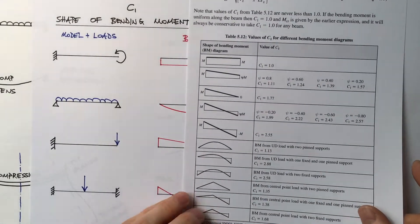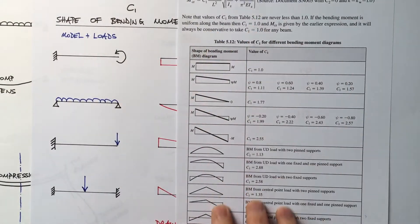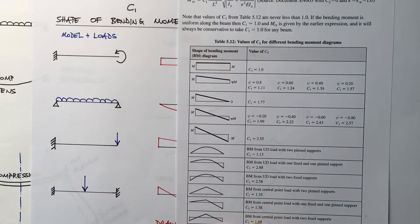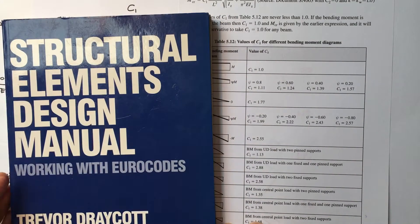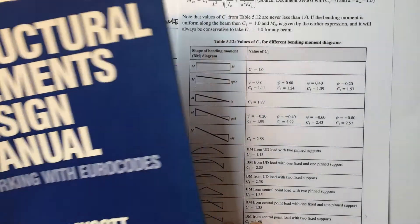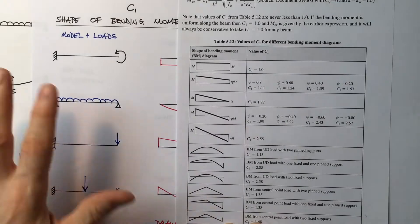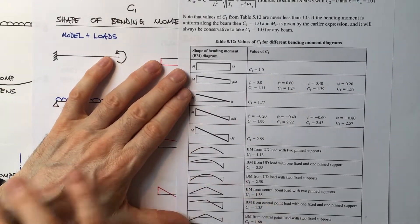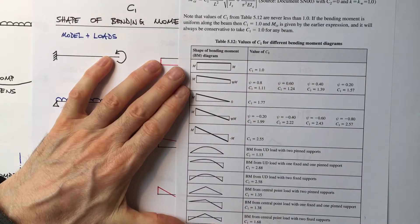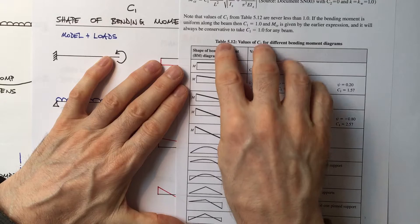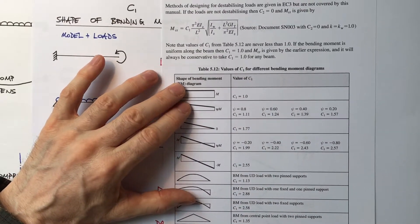Where do you find out about these bending moment shapes? The Eurocode doesn't actually give you that, but I've taken this table from the textbook — structural element design. It's a very intelligent and concise textbook. Here are all the different C1 factors for bending.